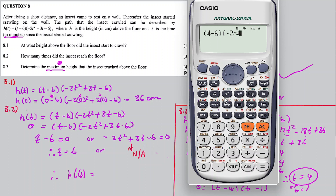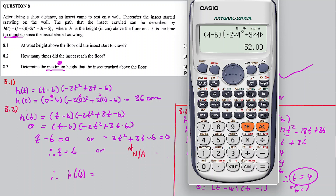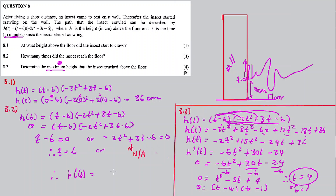Substituting t equals four: it's open bracket four minus six, close bracket, times negative 2 times four squared, plus three times four minus six. This works out to equal 52. So the maximum height the insect reached above the ground is 52 centimeters. That is the answer to 8.3, the last question.